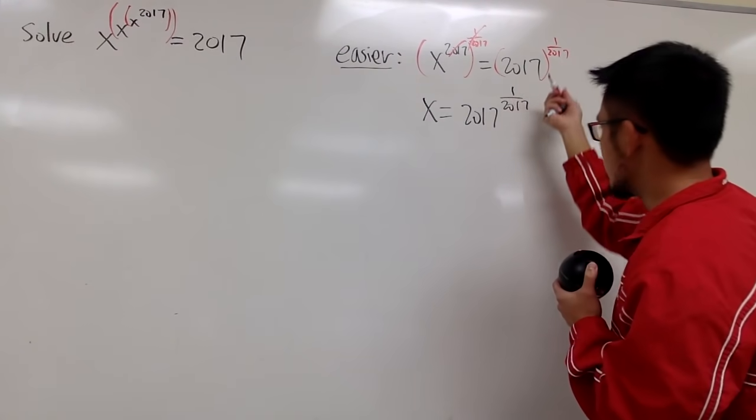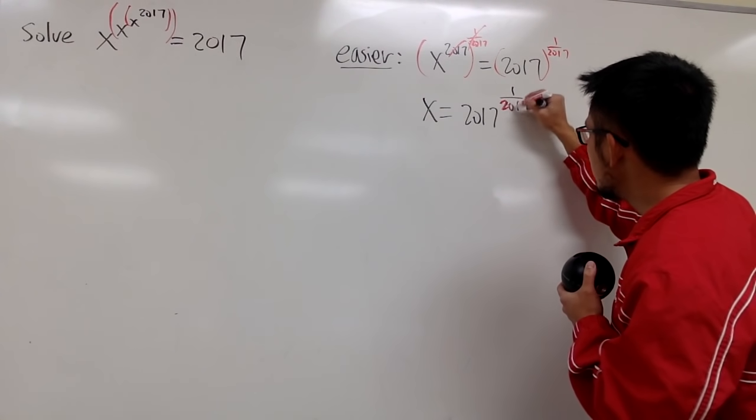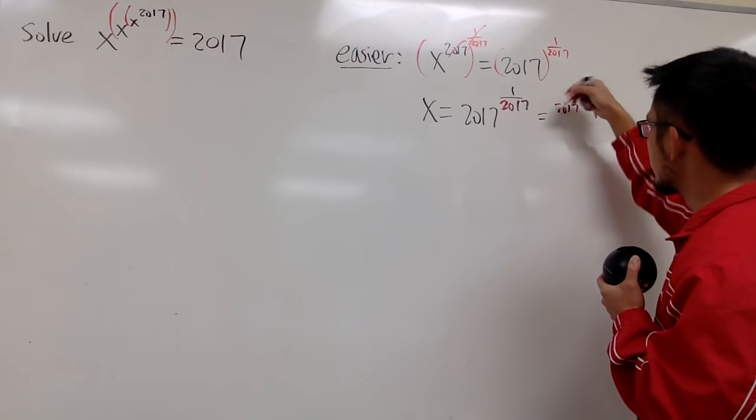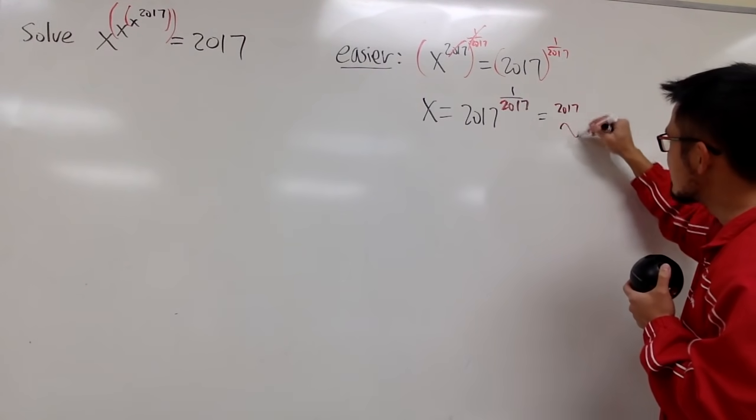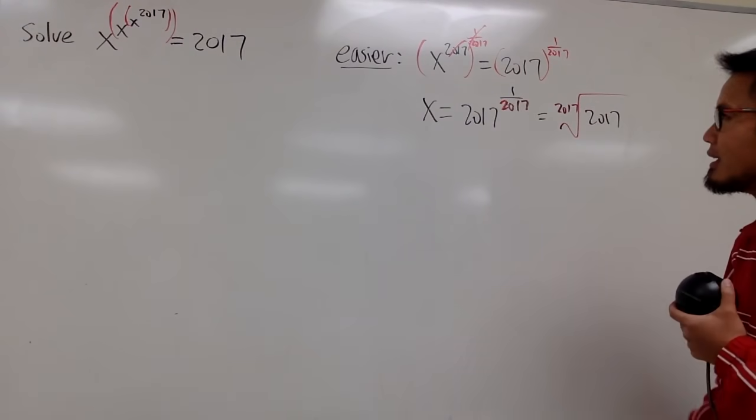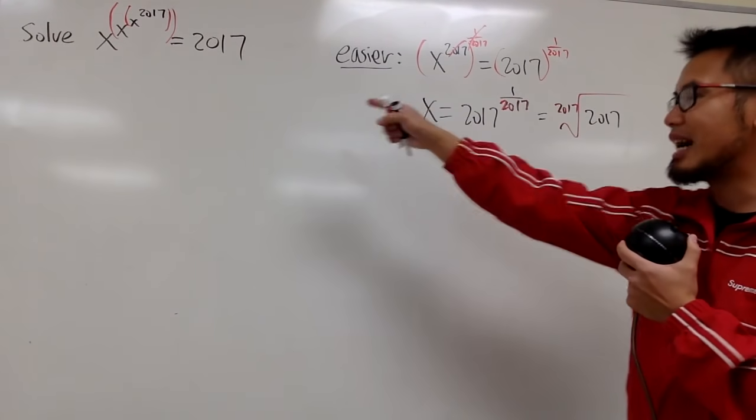And if you prefer, you can write this in the radical form, because we have the fraction exponent. So this 2017 in the denominator is going to be the index, so that's the 2017th root of this base, which is 2017 to the 1st power. So yes, this is a solution for that. So much easier than that, right?